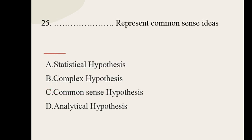Question number twenty-five — the last question. Dash represents common sense ideas. Options are: statistical hypothesis, complex hypothesis, common sense hypothesis, analytical hypothesis. And the correct option for question number twenty-five is common sense hypothesis.